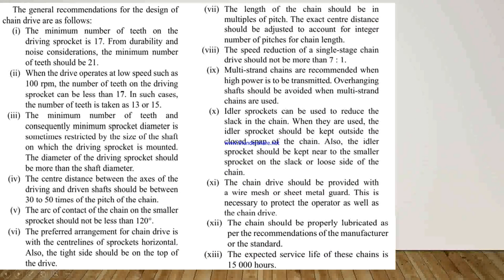The center distance between the driving and driven shafts should be between 30 to 50 times the pitch of the chain, and the arc of contact on the smaller sprocket should not be less than 120 degrees. The preferred arrangement is with the center lines of the sprockets horizontal and the tight side on top. The length of the chain should be in multiples of the pitch, and the exact center distance should be adjusted to account for an integer number of pitches. The speed reduction of a single-stage chain drive should not be more than 7:1, and multi-strand chains are recommended when high power is to be transmitted.